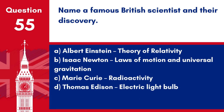Question 55. Name a famous British scientist and their discovery. A. Albert Einstein, Theory of Relativity. B. Isaac Newton, Laws of Motion and Universal Gravitation. C. Marie Curie, Radioactivity. D. Thomas Edison, Electric Light Bulb. Answer: B. Isaac Newton, Laws of Motion and Universal Gravitation. Isaac Newton, a famous British scientist, is known for his discovery of the laws of motion and universal gravitation.